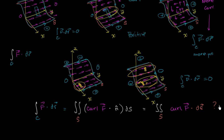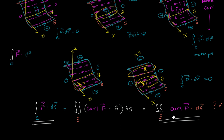It actually turns out that this is the case — though I haven't proven it here, hopefully you have some intuition for why it makes sense. This idea, that the line integral around the boundary equals the surface integral of the curl, is called Stokes' Theorem. We'll explore it more in the next few videos.